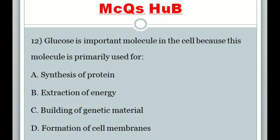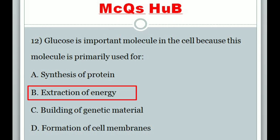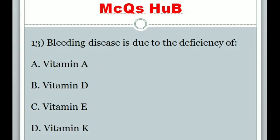Question 12: Glucose is an important molecule in the cell because this molecule is primarily used for? Answer B: Extraction of energy.